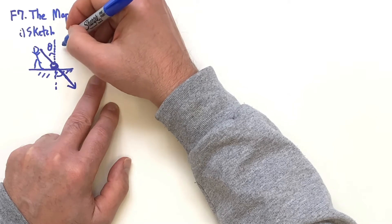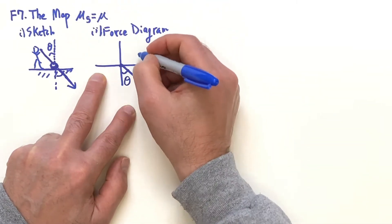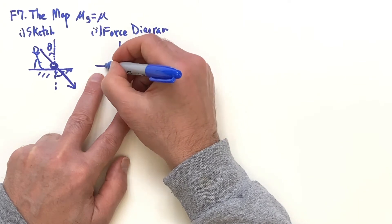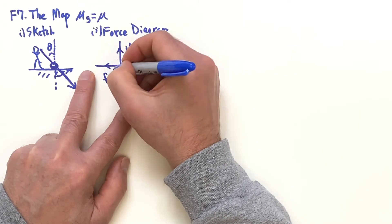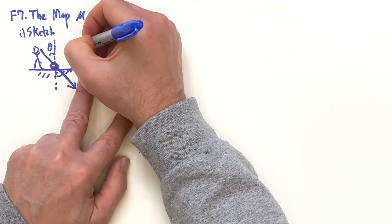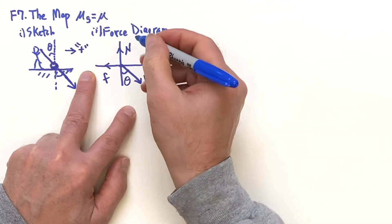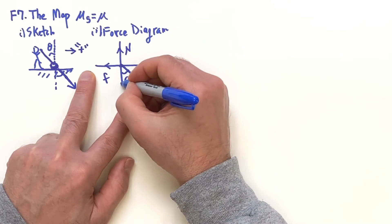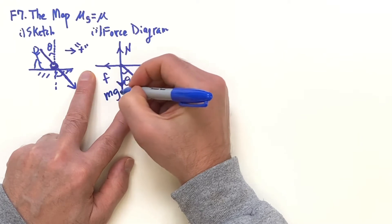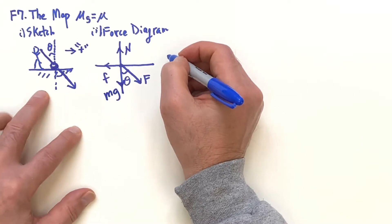Then here you have the normal force N pushing up on the mop, you have your friction F in the opposite direction (we're picking going to the right as positive, that's the direction of motion), and then here's mg.